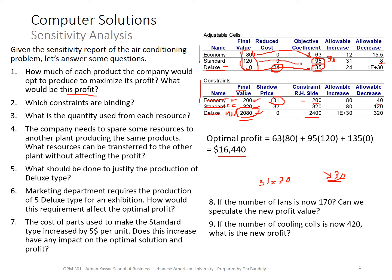Finally, if the number of cooling coils is now 420 — we went from 320 to 420, an increase of 100. We compare this to the allowable increase, which is $80. The increase of 100 exceeds the allowable increase of 80, so the answer is: we don't know. We cannot use our sensitivity report to answer this question. This is one of the rare cases where 'I don't know' is the correct answer.